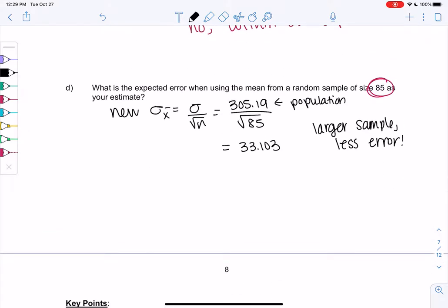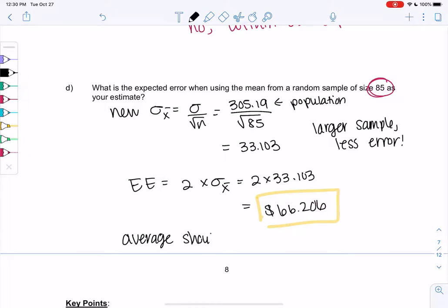Larger samples have less error. And then to find expected error, we just do 2 times the standard deviation, 2 times 33.103, and we get an expected error of only 66.206. So this is telling me that if I take samples of size 85, my average should be within plus or minus 66.206 of the real average. So this section or chapter is going to lead us into making estimates of the actual average from a sample. It's going to tell us how close we are to the actual average. So as we get bigger samples, we should be getting better and better estimates.